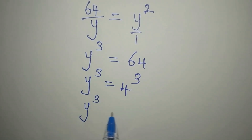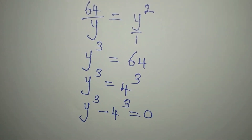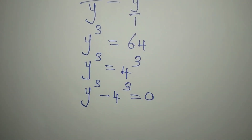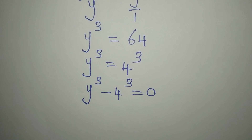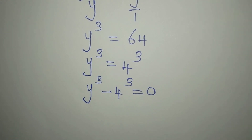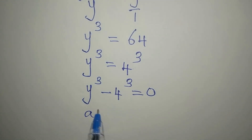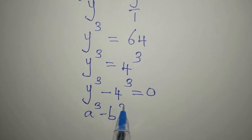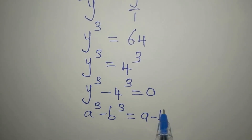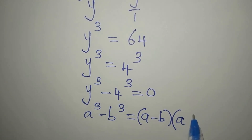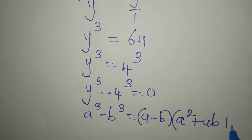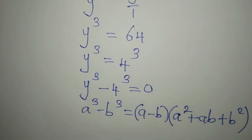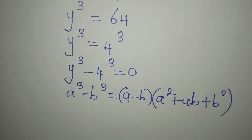Bringing this to the left, we have y to the power of 3 minus 4 to the power of 3 equals 0. Now we can apply the difference of two cubes, just like we apply the difference of two squares. So imagine you have a to the power of 3 minus b to the power of 3 — this gives a minus b, and on the other hand we have a squared plus ab plus b squared.